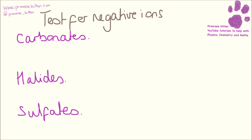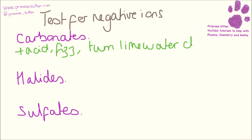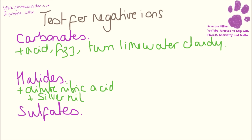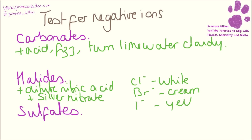As well as positive ions you need to know how to test for negative ions. So testing for carbonate: if we add an acid, it should fizz, and then the fizz should be carbon dioxide which should turn limewater cloudy. For halides, there are three different halides that you need to know. First thing we need to do is to add dilute nitric acid, then we need to add silver nitrate, and chlorine ions will go white, bromide ions will go cream, and iodide ions will go yellow.